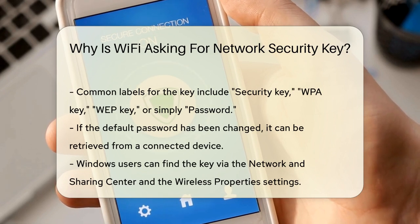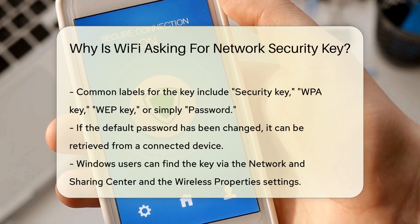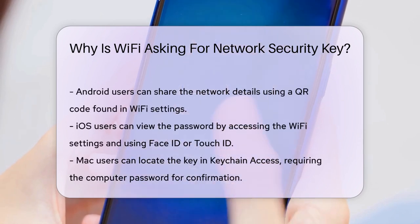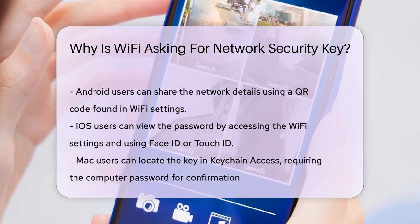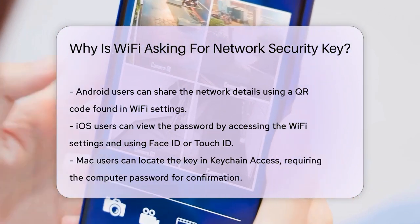On an Android device, you can't see the network security key in plain text, but you can use a QR code to share the network details. Go to Settings, select Connections, then Wi-Fi, and tap on the network whose security key you want to find. Look for the QR code option and scan it to get the Wi-Fi password.